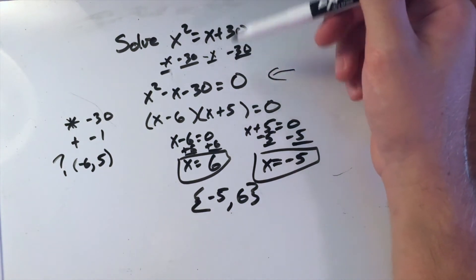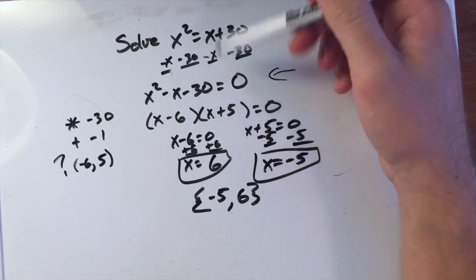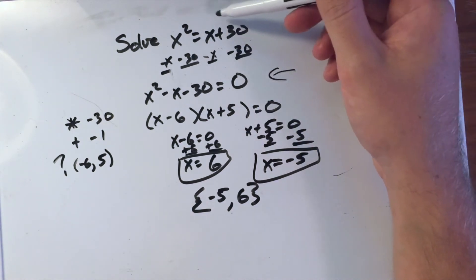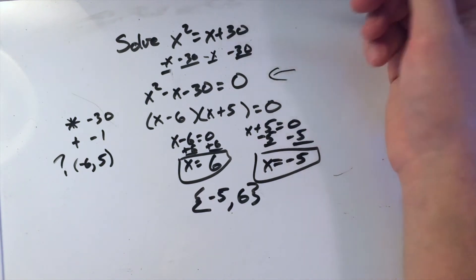We can check it back in and see: negative 5 squared is 25, which equals negative 5 plus 30, which is 25. We're good. You can do the same thing with 6: 6 squared is 36, and 6 plus 30 is 36.